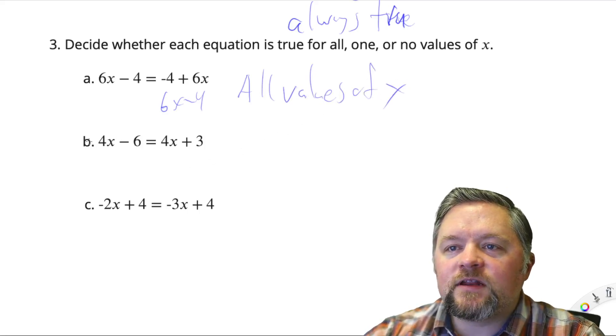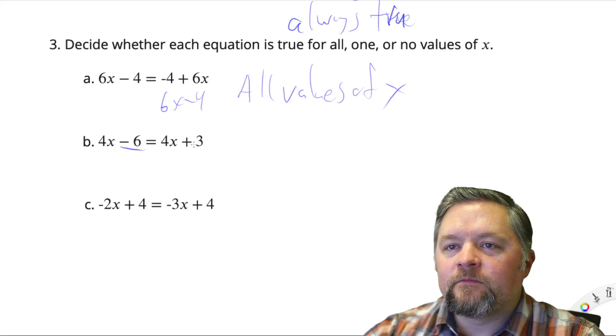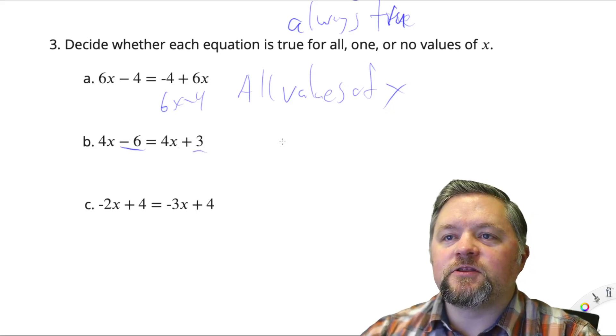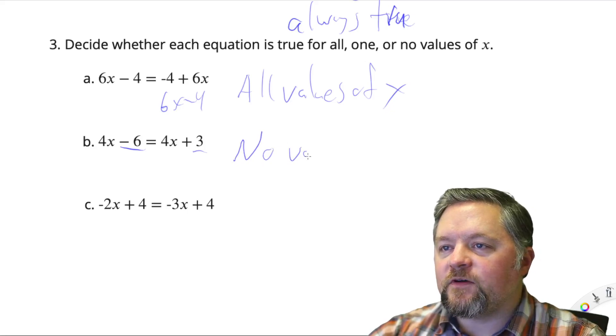Now, what about the next one? 4x subtract 6 equals 4x plus 3. We have 4x on each side, but those constants are different. So this one's going to be no values of x.